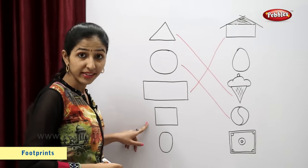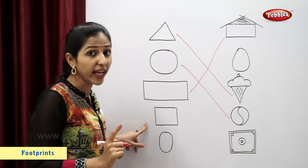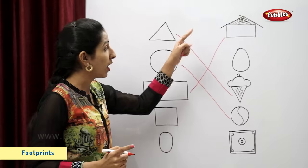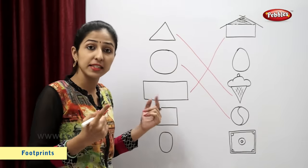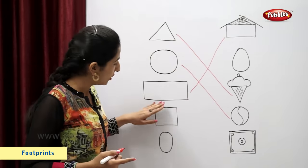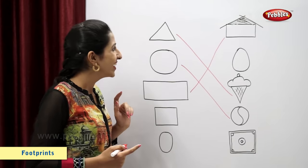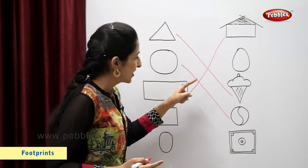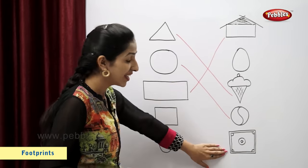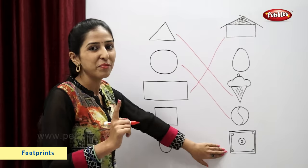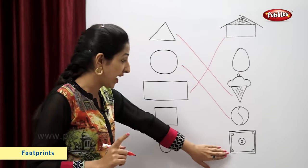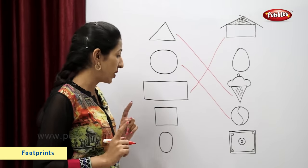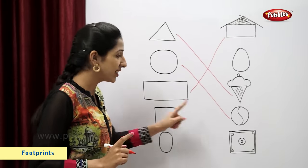This is a square. So now let's find a figure similar to this square. Carom board. A carom board looks like a square. So now let's match.